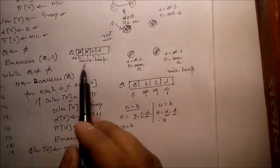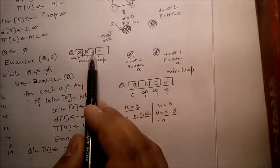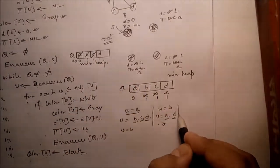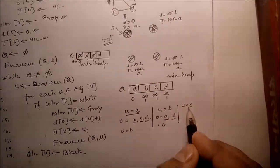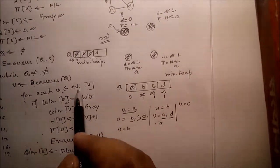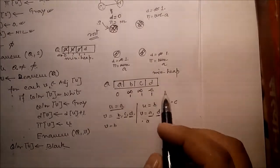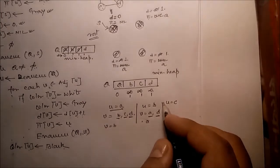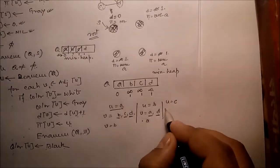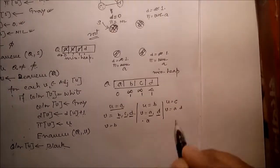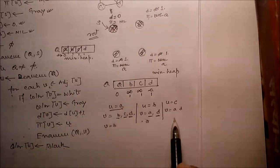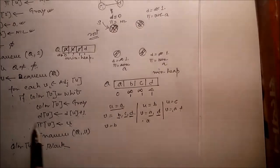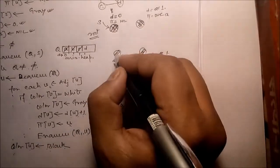Q is not equal to phi — yes, two elements remain. Dequeue C. Now U equals C. For each V adjacent to U: adjacent of C are A and D. Color of A equals white — no. Color of D equals white — no. Don't do anything. Make C black.